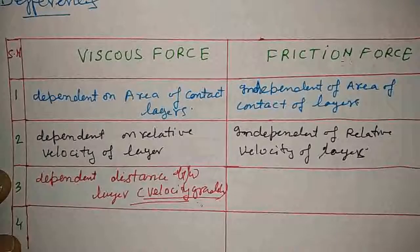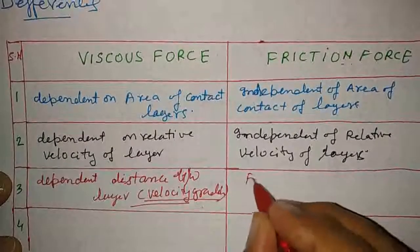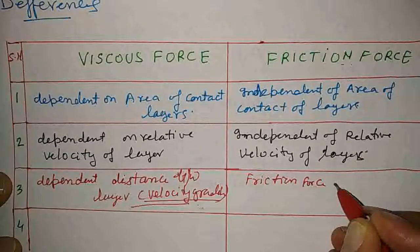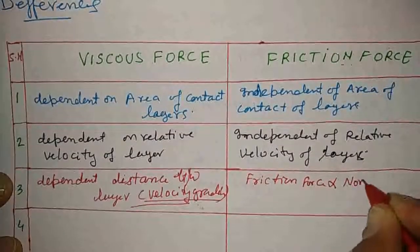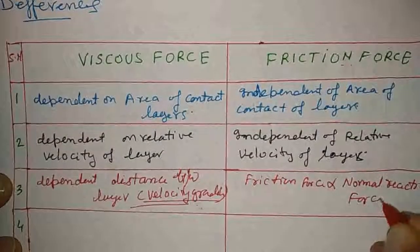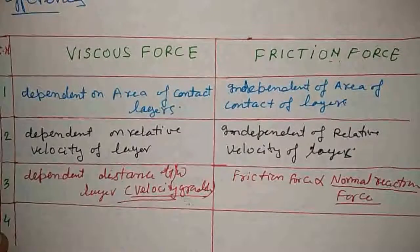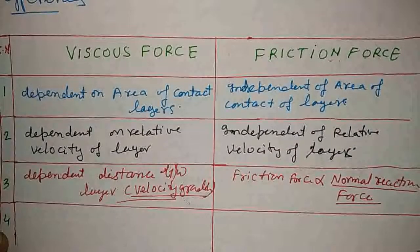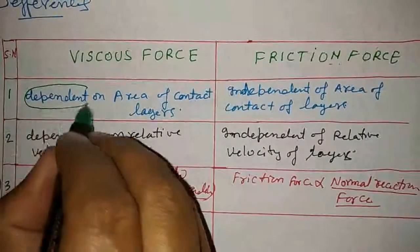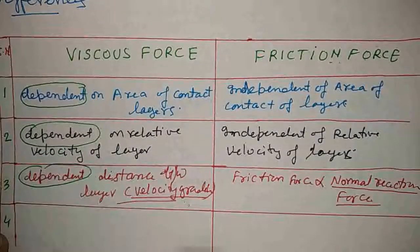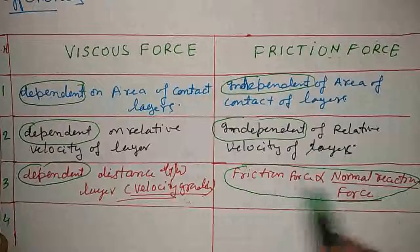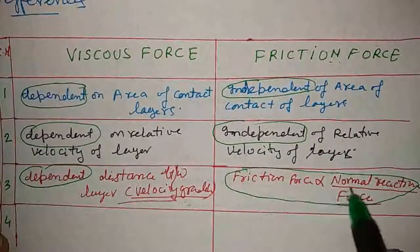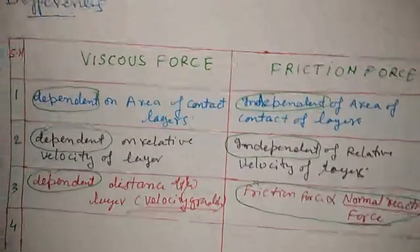The fourth difference concerns normal reaction force. Friction force is directly proportional to the normal reaction force acting on the surfaces. Viscous force, on the other hand, is independent of normal reaction force. So to summarize: viscous force has three dependencies — area of contact, relative velocity, and distance between layers — and is independent of normal reaction force; whereas friction force is dependent on normal reaction force and independent of the other three.